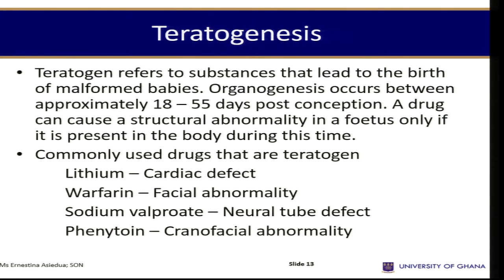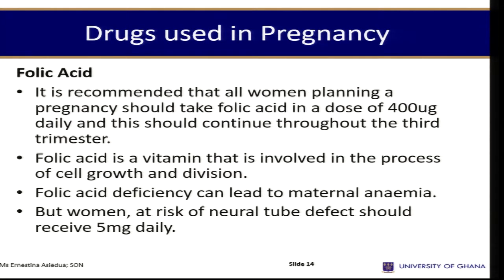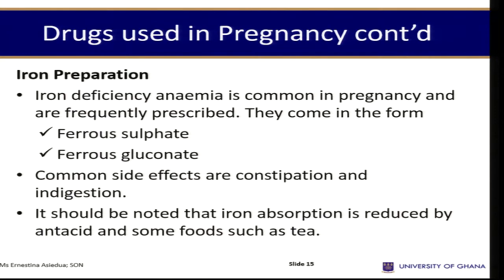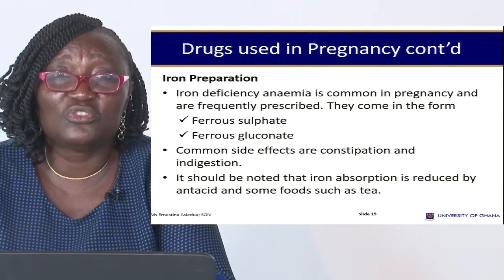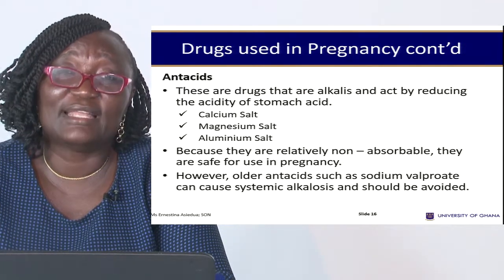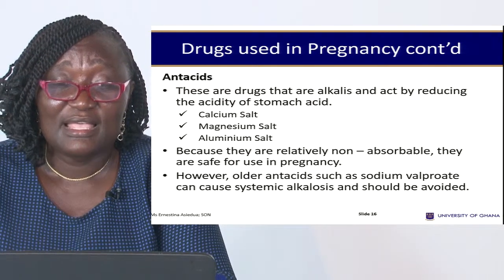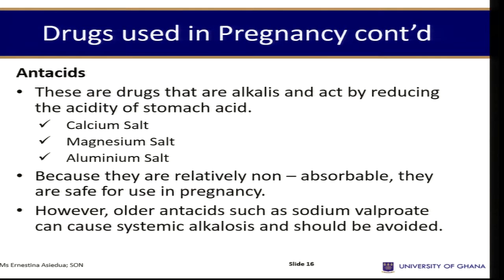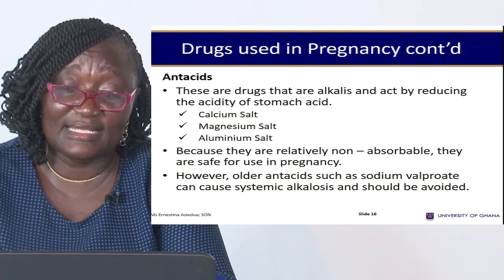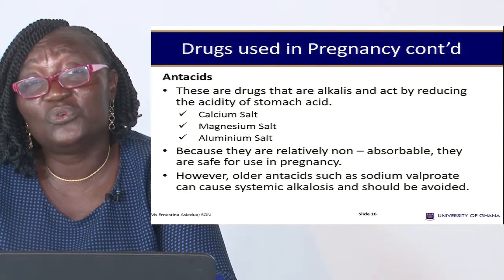Commonly used drugs that are safe include folic acid. It is recommended that all women — even those planning to become pregnant — should take folic acid before pregnancy, because it prevents many chromosomal abnormalities in the fetus. We also have iron preparations such as ferrous sulfate and ferrous gluconate, which are routinely administered to women in antenatal clinics. Antacids — calcium salts, magnesium sulfate, aluminium sulfate — are relatively non-absorbable and safe for use in pregnancy.